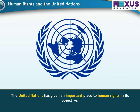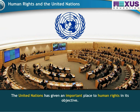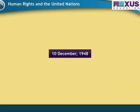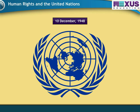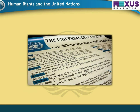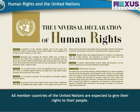The United Nations has given an important place to human rights in its objectives. The dissemination and publicity of human rights is one of its important objectives. On 10th December 1948, the United Nations proclaimed the Universal Declaration of Human Rights and laid the foundation for these rights. The Universal Declaration of Human Rights consists of 30 articles. All member countries of the United Nations are expected to give these rights to their people.